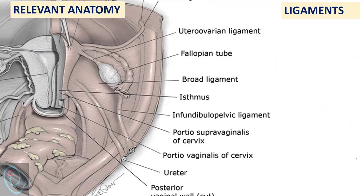Regarding relevant anatomy, starting with the ligaments of the ovary: the ovary is supported by the infundibulopelvic ligament, also known as the suspensory ligament of the ovary. The infundibulopelvic ligament is a fold of the broad ligament that attaches to the pelvic sidewall. The ovarian vessels pass through the infundibulopelvic ligament. Another ligament is the ovarian ligament, also known as the utero-ovarian ligament, which connects the ovary with the uterus.